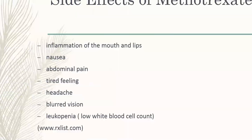There are several side effects of methotrexate, as there are with other chemotherapeutic drugs. These include inflammation of the lips, nausea, abdominal pain, blurred vision, and leukopenia, which is reduced white blood cell count. These side effects occur because methotrexate targets cells that are actively or fast dividing.